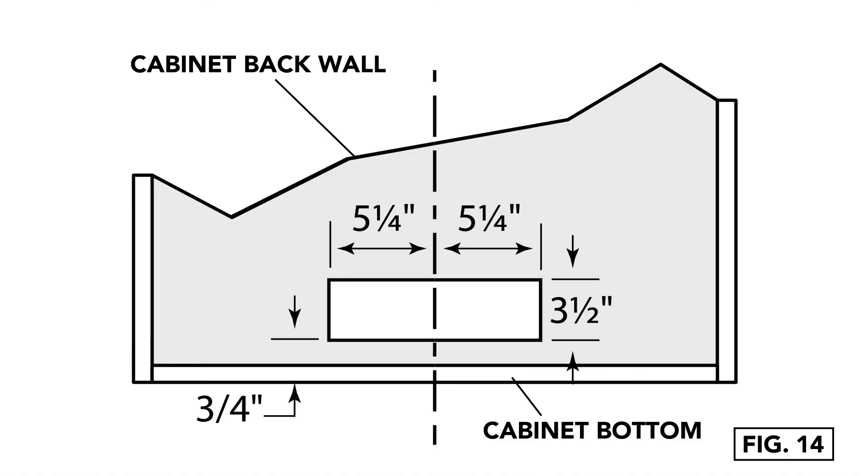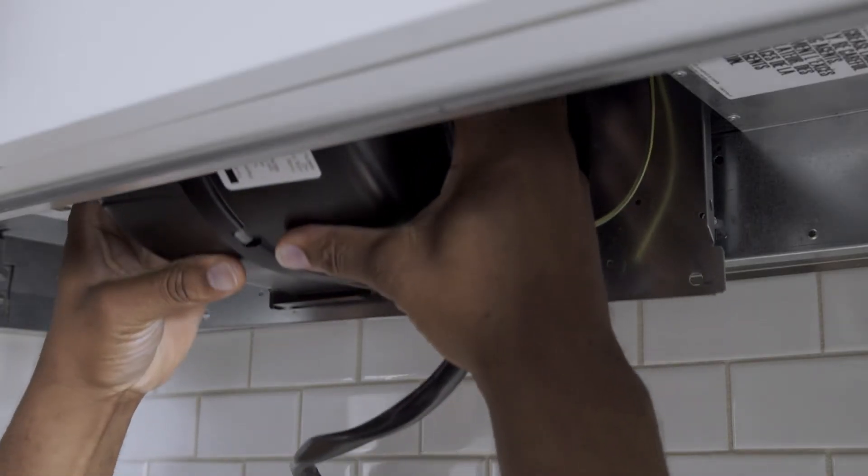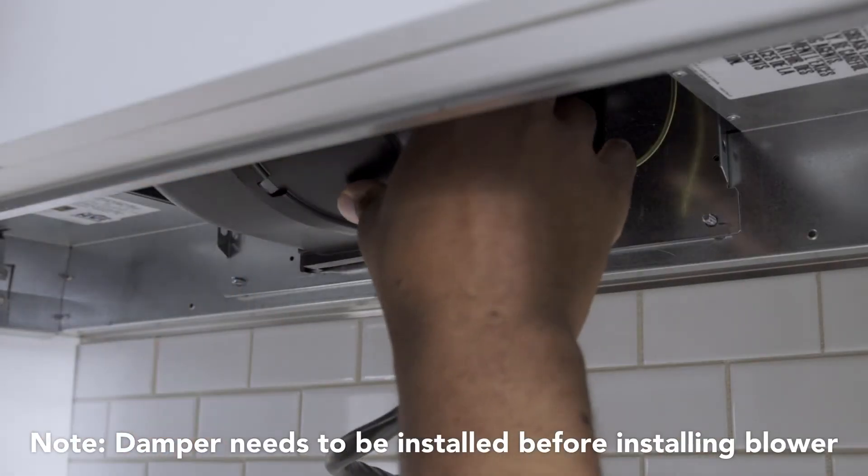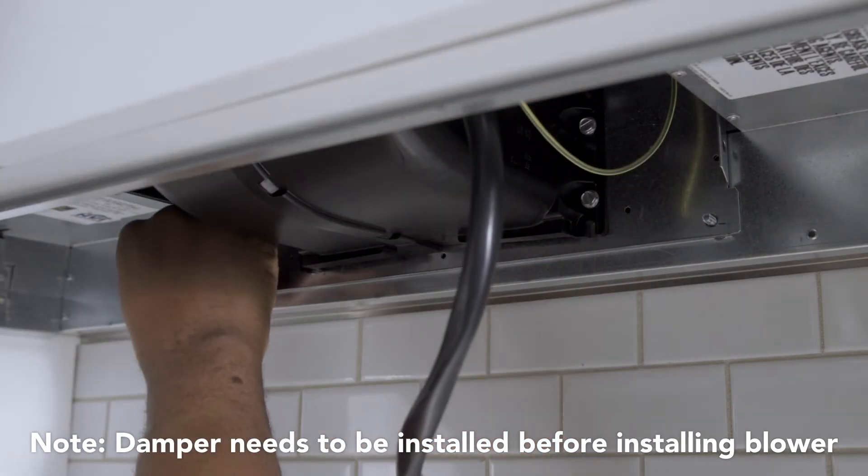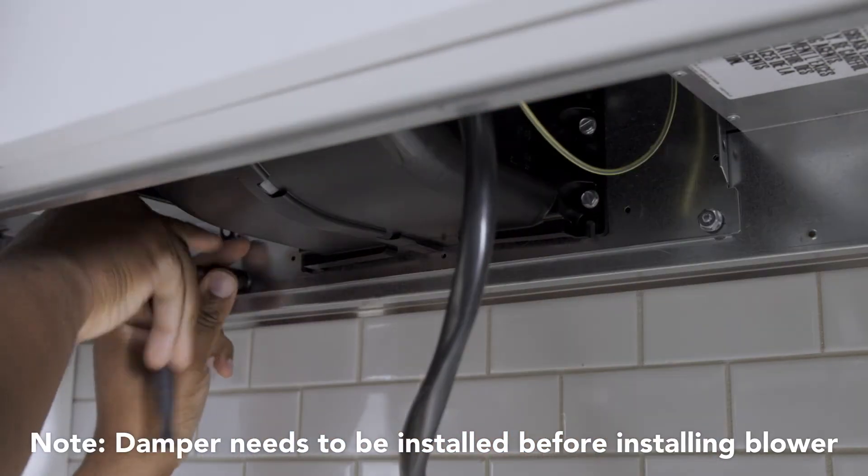This figure shows the exact measurements the hole should be cut in the back of the cabinet for horizontal ducting to align properly. For horizontal blower setups, attach the horizontal adapter and blower after the power pack is installed.